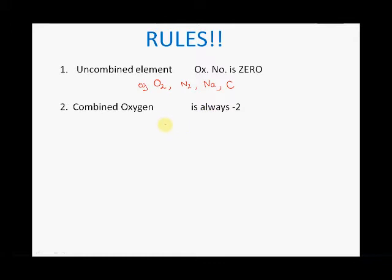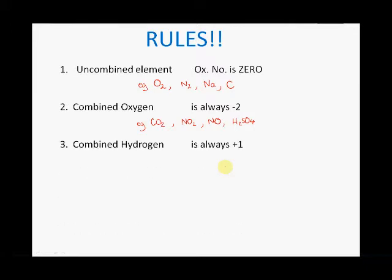Rule two: combined oxygen is always negative two, always minus two. So if we had CO₂, the oxygen's oxidation number will always be negative two. Similarly for NO₂, the oxidation number is always negative two. Even in nitrogen monoxide, the oxidation number is minus two, and including H₂SO₄, the oxygen atoms there have an oxidation number of negative two.